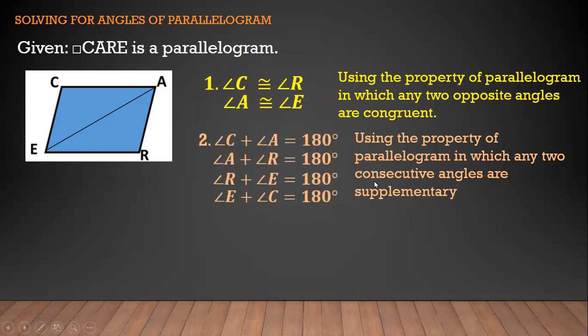Consecutive means magkasunod — supplementary. If you add the consecutive angles together, they are equal to 180 degrees. So we have angle C and angle A: when added, the answer is 180 degrees. Supplementary equals 180 degrees.